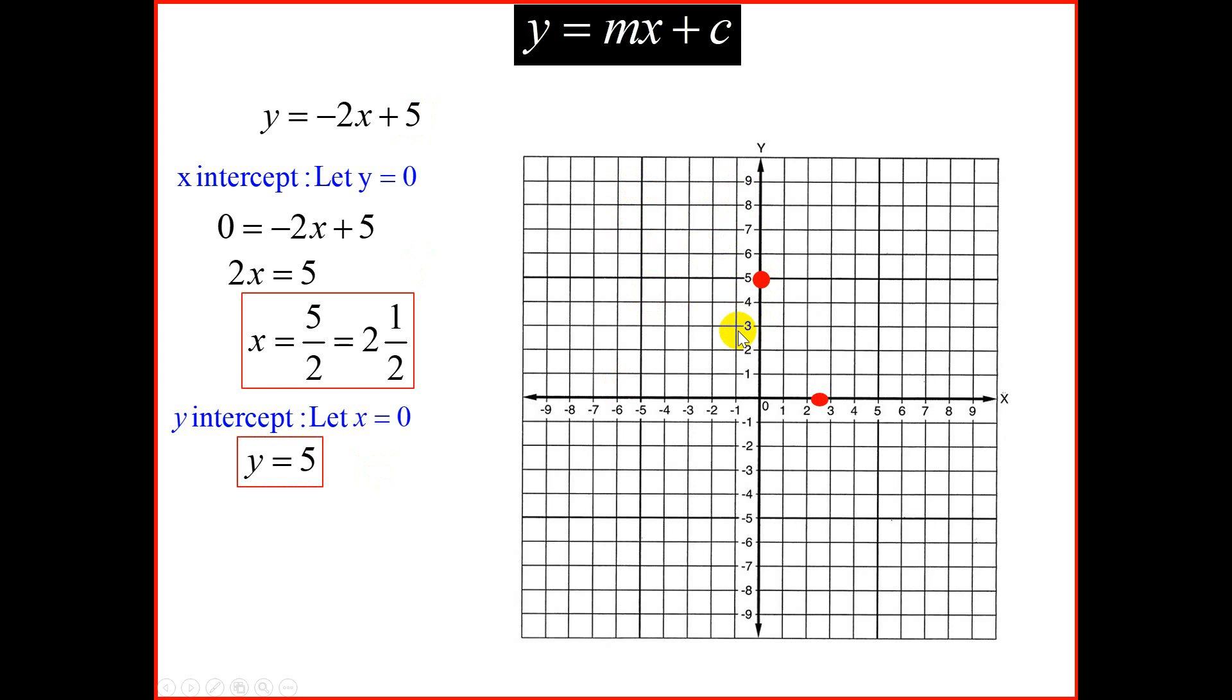Take your ruler and join those two dots. We're going to get the equation, which is y equal to minus 2x plus 5, and we have the graph for it. Remember, once again, that your gradient is negative 2, and we know that our constant is 5. If the gradient is negative 2, so from left to right, you notice we have a downhill.